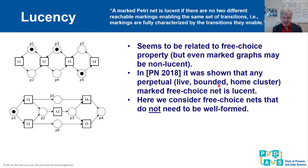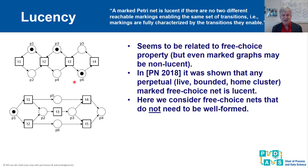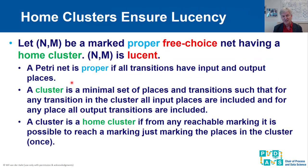It is natural to look at boundedness and the free choice property. But as the earlier mark graph example showed, even well-formed mark graphs can be non-lucent. In the Petri Nets 2018 paper, I looked at well-formed free choice nets satisfying a certain other property. Here we drop the well-formedness requirement, and that is the surprising part of the result. If we have a marked proper free choice net having a home cluster, the net is lucent.